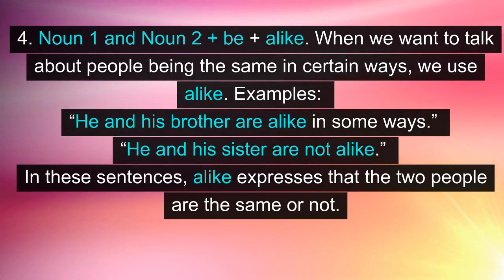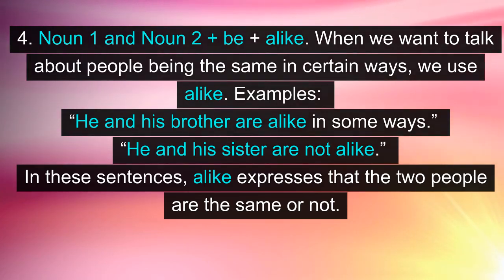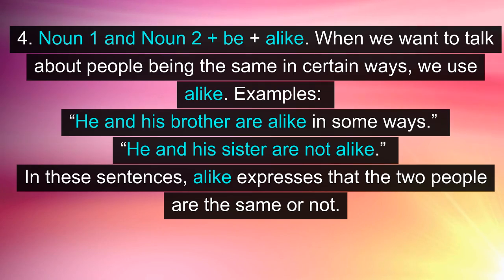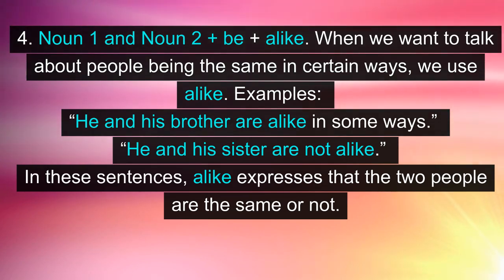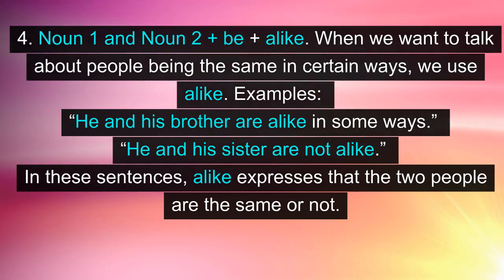Pattern 4: Noun 1 and Noun 2 + be + alike. When we want to talk about people being the same in certain ways, we use 'alike.' Examples: 'He and his brother are alike in some ways.' 'He and his sister are not alike.' In these sentences, 'alike' expresses that the two people are the same or not.